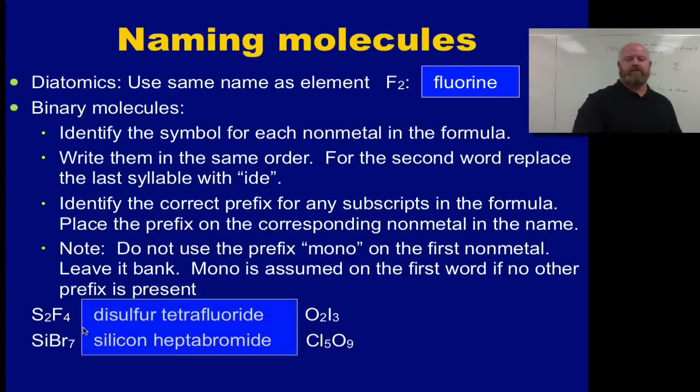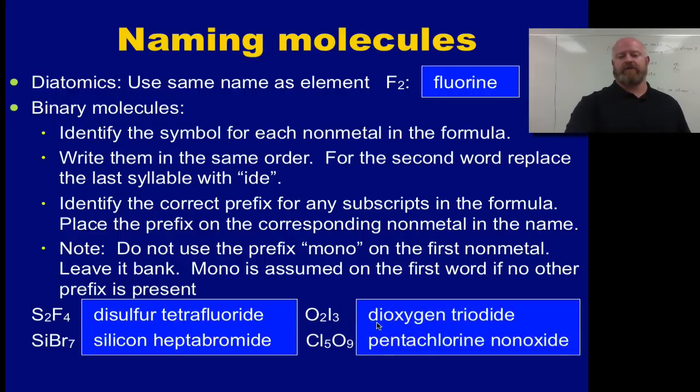A couple more examples, if you take a look on our screen here, we have O2I3 and Cl5O9. So if you want to try these on your own, you can, just pause the video, otherwise I want to show them to you now. So if we look, we have two oxygens, so we call this dioxygen, and we have three iodines, so it would be triodide, so dioxygen triodide. We have five chlorines and nine oxygens, so it's pentachlorine, or sorry, nonoxide. Make sure that only the second word you're changing to the IDE endings. Notice how oxygen and chlorine are not changed for the first word there.